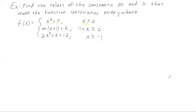The second part, m times x plus 1 plus k, is a polynomial function, so this part is continuous everywhere if we don't consider the restrictions. The last part is also a polynomial, so it's continuous everywhere. Since each piece is continuous on its own, we might have trouble with continuity at x=2 and at x=-1.